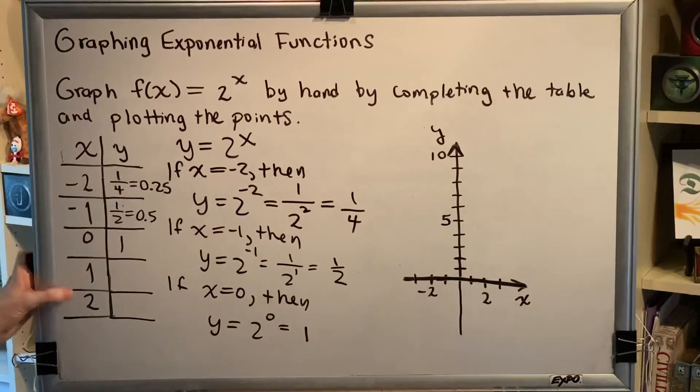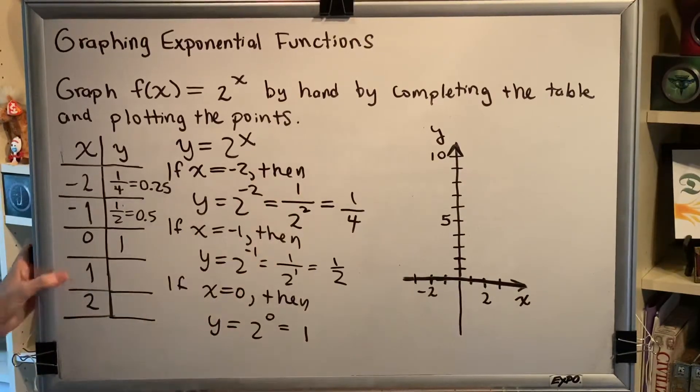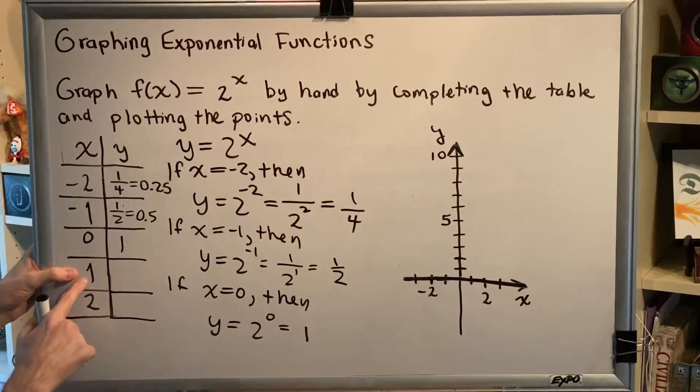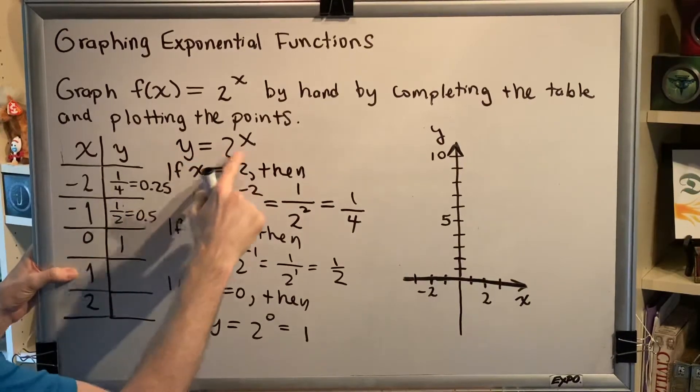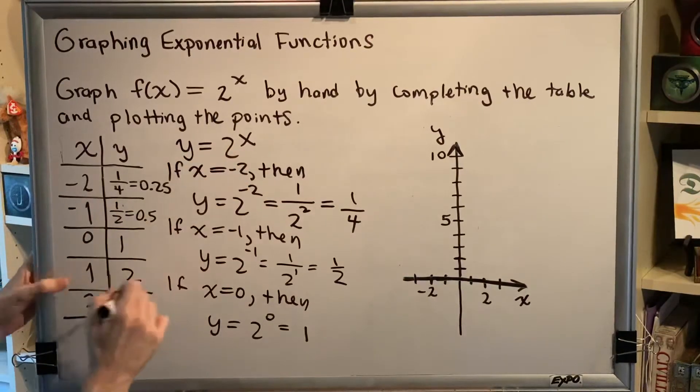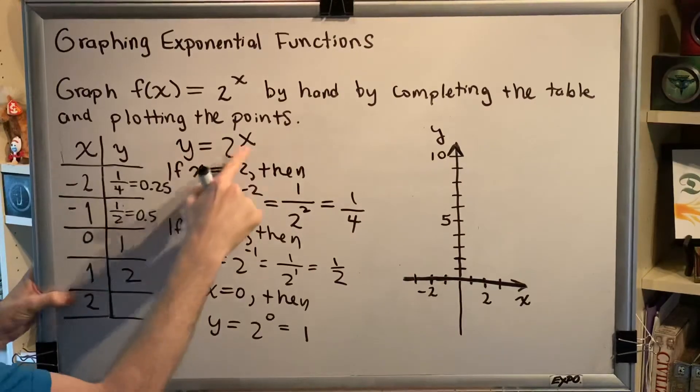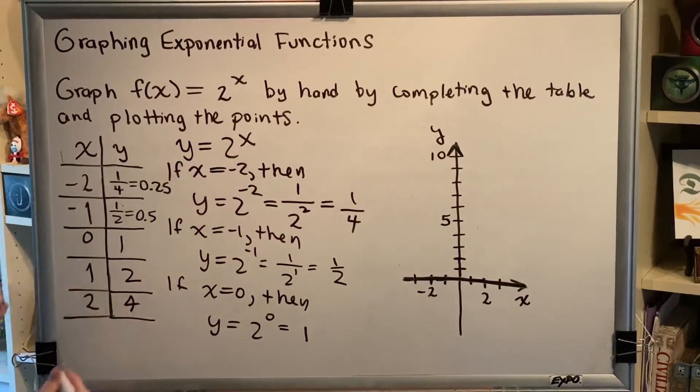The remaining values are pretty easy. If we replace x with 1, then y = 2^1, which is just 2. And if we replace x with 2, then y = 2^2, which is 4.